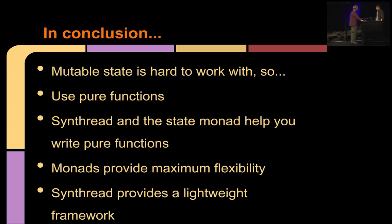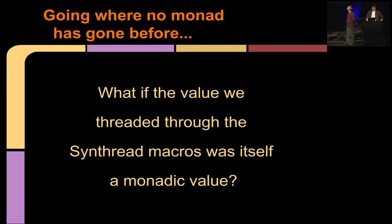You know, that's interesting. So the state monad is a value, right? It gives you values at runtime. And we're dealing with macros at compile time. I wonder what would happen if the value that we were threading through the Synthread macro were itself a monadic value? Ouch. Let's talk about that some other time. Are there any questions?